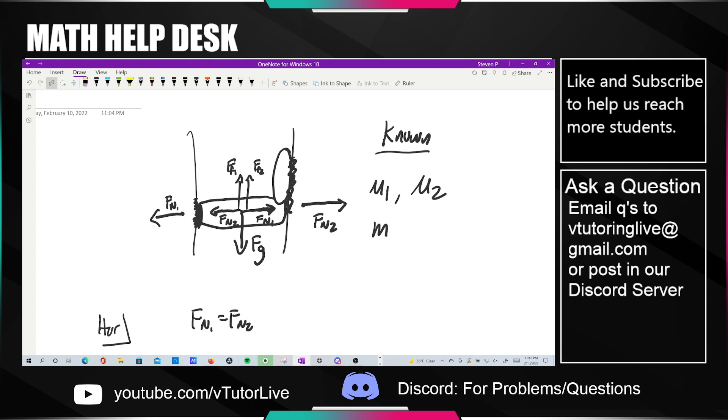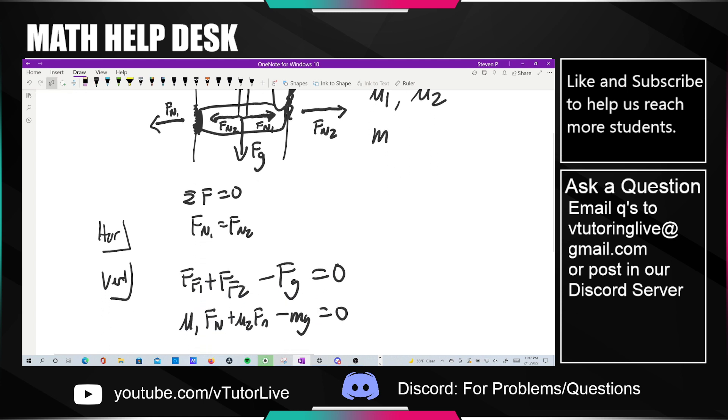There's no movement, there's no acceleration, which means that the sum of all the forces is equal to zero. So Fn1 is equal to Fn2. That's basically saying their feet are pushing at the same force as their back. Now let's look at the vertical direction.